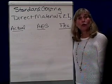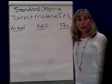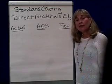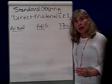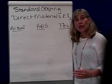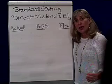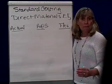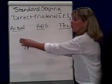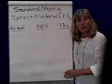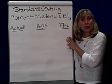Standard costing — the first variances we're going to look at have to do with materials. We would do these variances for each of our material inputs to figure out whether what we're actually spending agrees with our flexible budget.